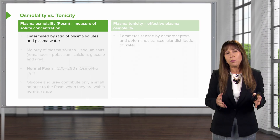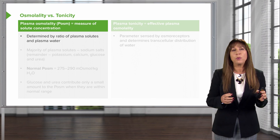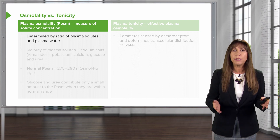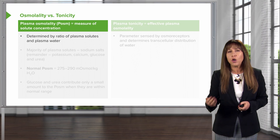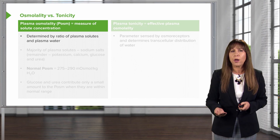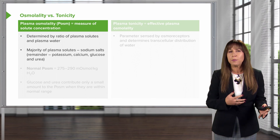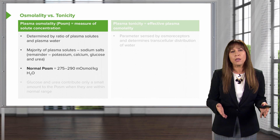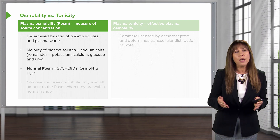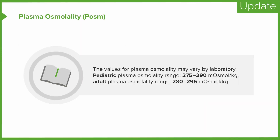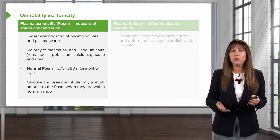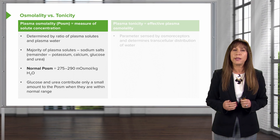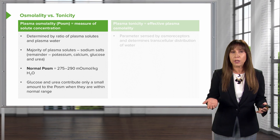The next concept that's really important when it comes to water balance is to understand the difference between osmolality and tonicity. Plasma osmolality is a measure of solute concentration, determined by the ratio of plasma solutes and plasma water. The majority of plasma solutes are sodium salts; potassium, calcium, glucose, and urea play less of a role. Normal plasma osmolality is somewhere between 275 to 290 milliosms per kilo. Glucose and urea contribute only a small amount when they're within the normal range, but if they're abnormal, they can contribute quite a bit more.